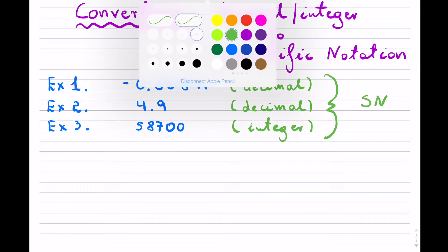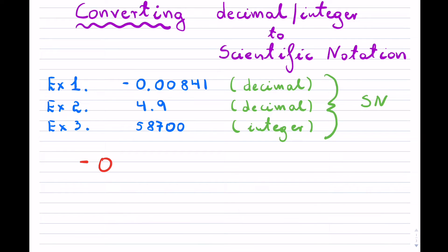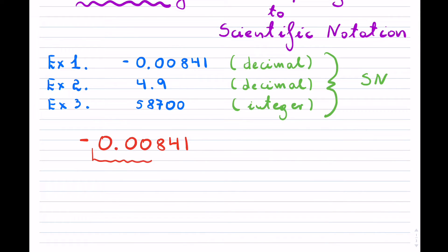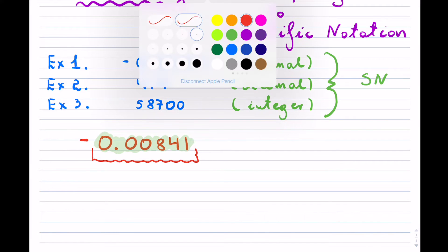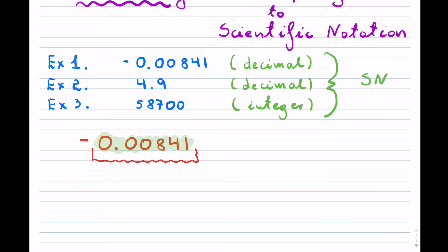So let's try the first one: negative 0.00841. One of the things that happens when you convert to scientific notation is you have to change the numbers so that you create something which is called a mantissa, which means the number itself, which is highlighted here, has to be between 1 and 10. In order to make this number between 1 and 10, I would have to shift the decimal over. So if I shift it here, it's still not between 1 and 10.